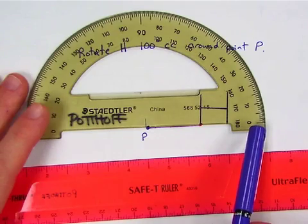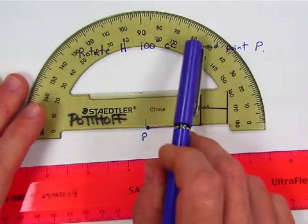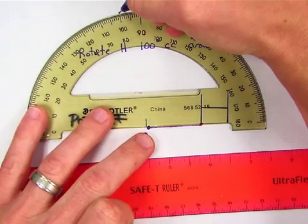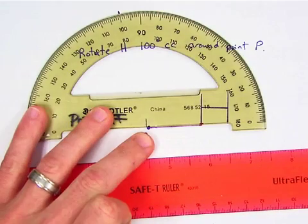Then we're going counter-clockwise, so that means we're going up this way. We want to go all the way to 100. And we just make a little mark there so we know where 100 is.